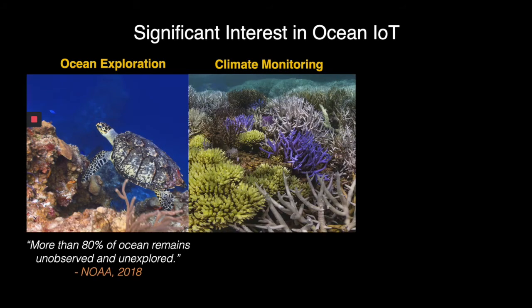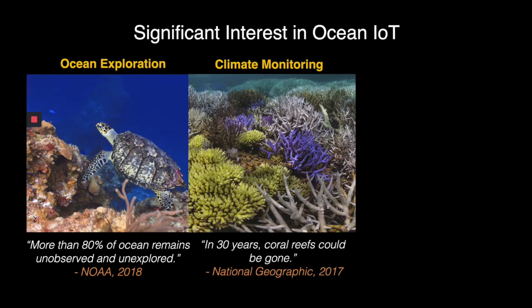Ocean IoT has also application in underwater climate monitoring. According to National Geographic, in 30 years coral reefs could be gone due to bleaching. It is extremely important to monitor them now because they are a fundamental part of the health of our planet and its ecosystem. With Ocean IoT, we can build technology that can image coral reef and monitor them over time and extract the information and send it to us using Internet of Things.